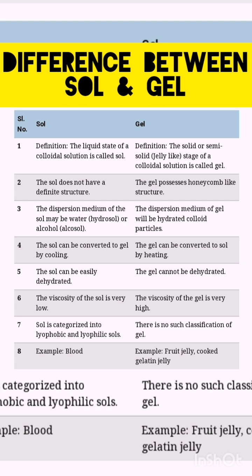That structure is called a honeycomb structure. Sol can be converted to gel by cooling, and gel can be converted to sol by heating. Sol can be easily dehydrated but gel cannot be easily dehydrated. Sol has a low viscosity, while gel has a high viscosity.